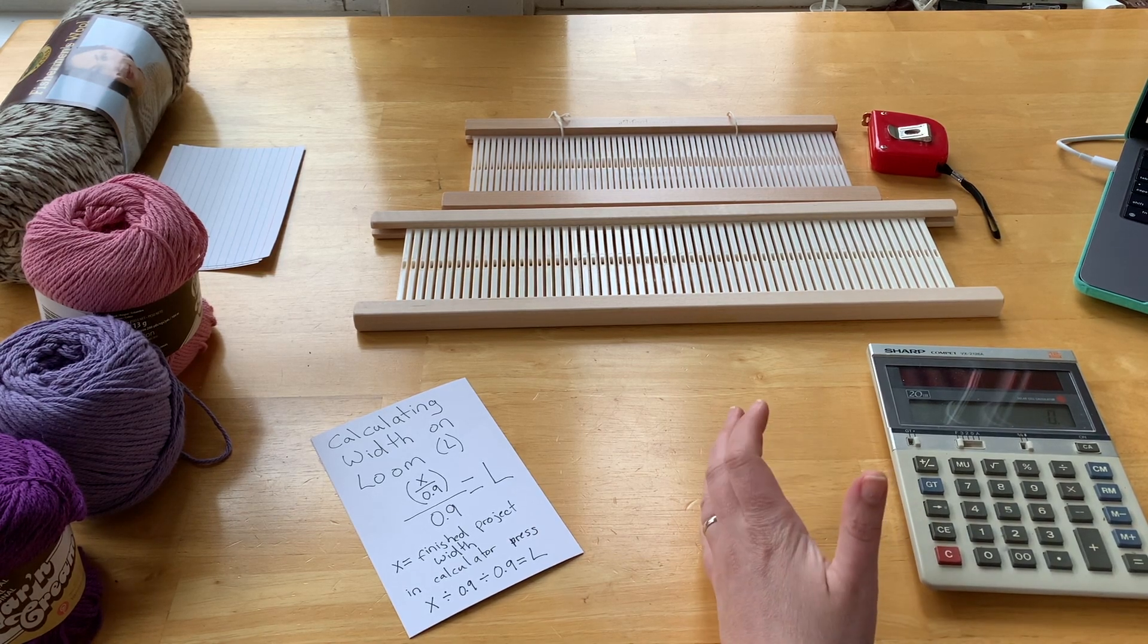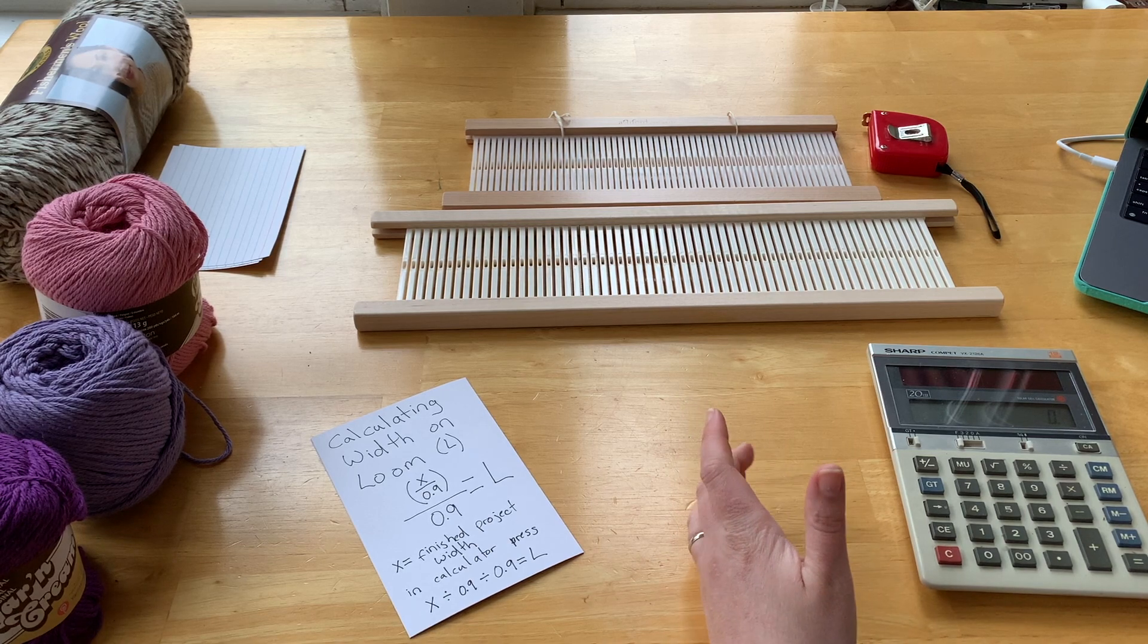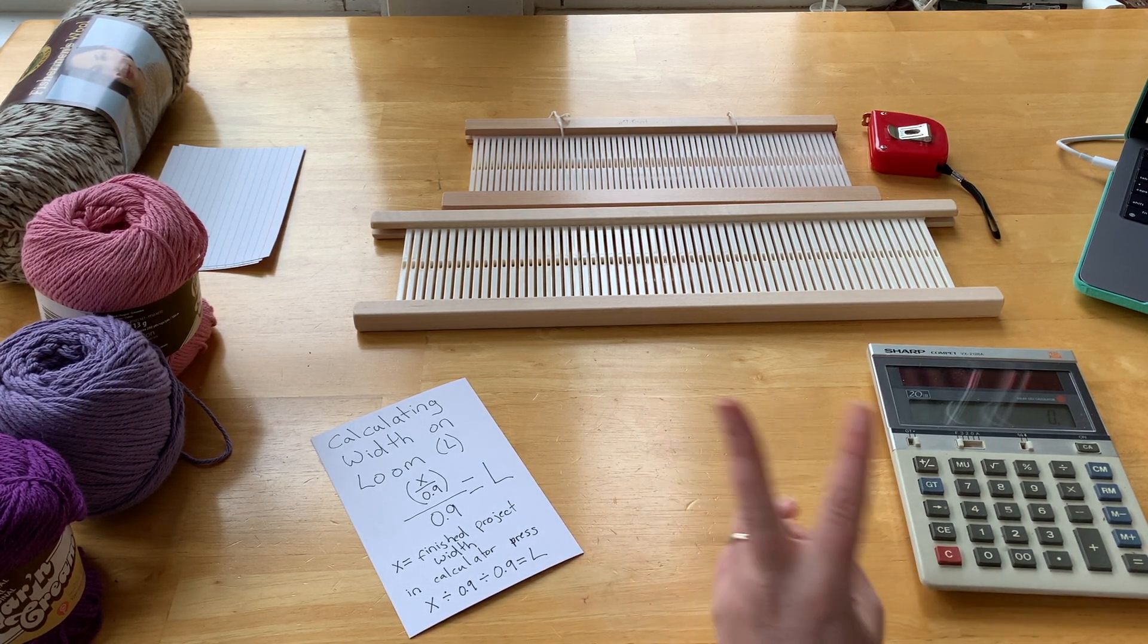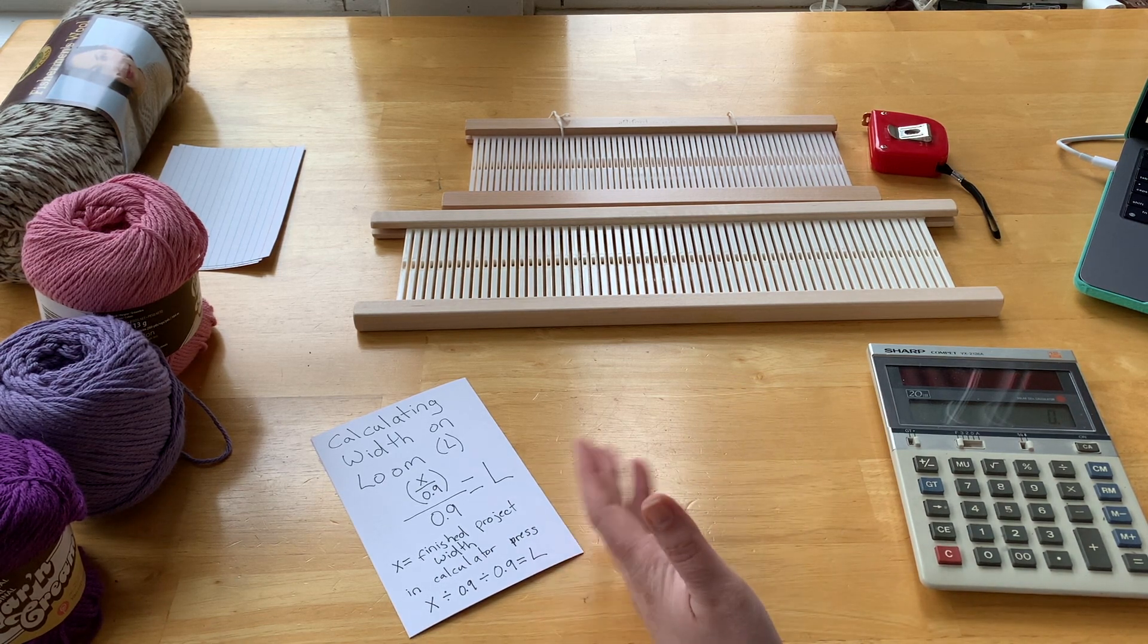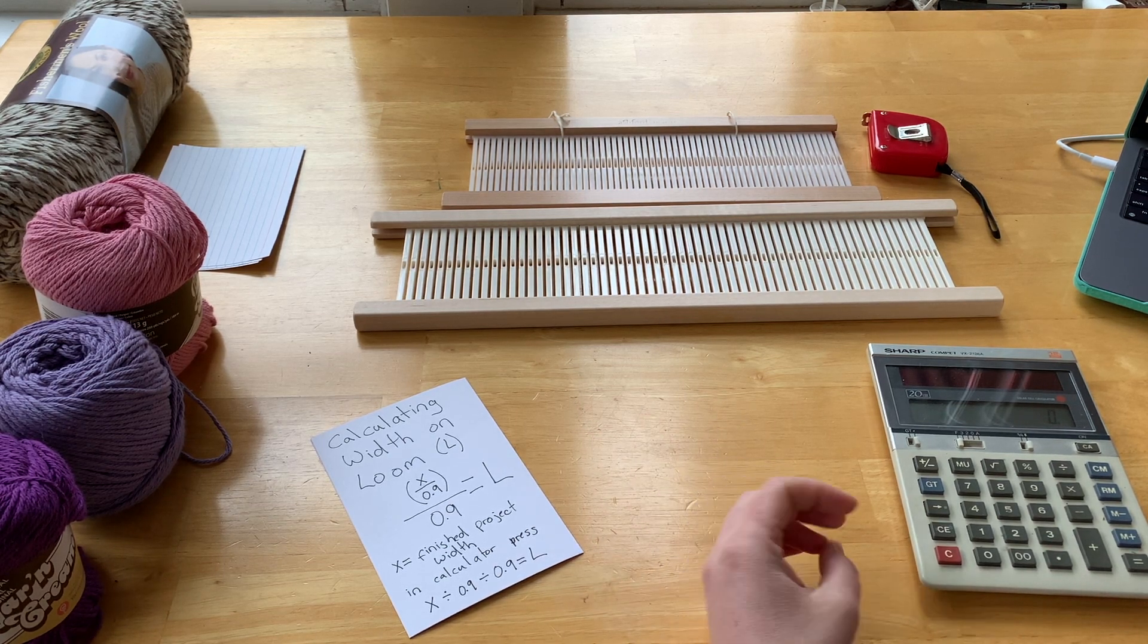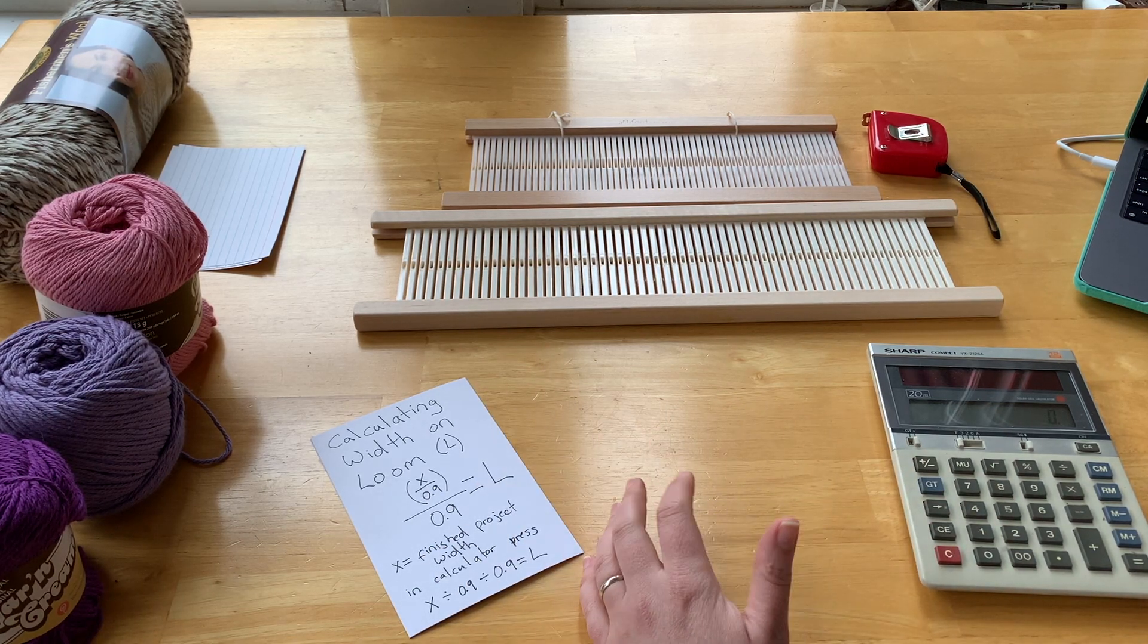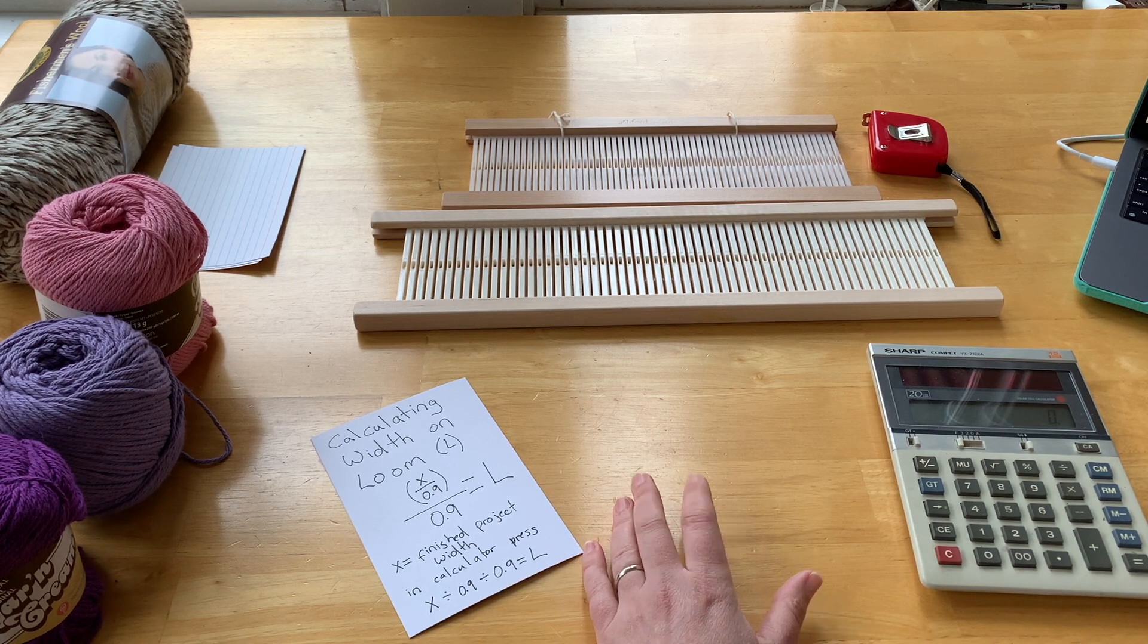Hello, this is video number one of a weave-along series about how to do double-width weaving with a single rigid heddle and two rod string heddles. I plan to post about a video a week, probably broken up into about five videos, maybe six if there are a lot of questions and I deem it necessary to do a final Q&A video. So let's begin.